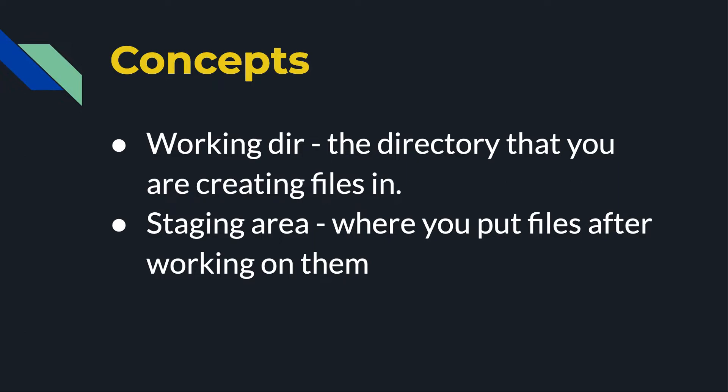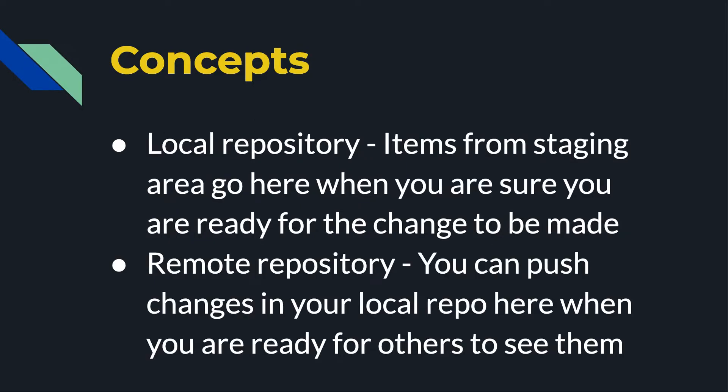A staging area for Git is where you put files after working on them — it's a location in memory where you're going to put the files after you're done working on them. Then we have what's called a local repository — items from the staging area will go here when you are sure you're ready for the change to be made. And then the remote repository — you can push changes in your local repository to the remote repository when you're ready for others to see them.